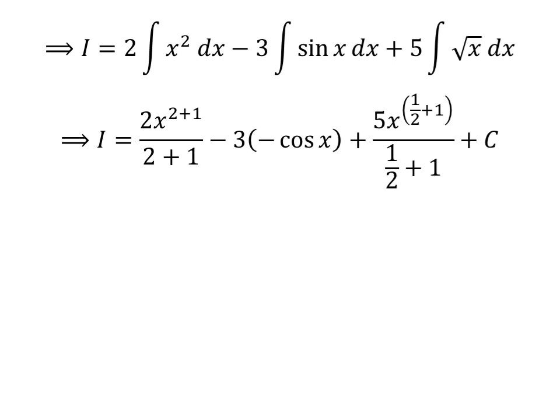So, i is equal to 2 times x raised to the power of 2 plus 1 upon 2 plus 1 minus 3 times minus cosine of x plus 5 times x raised to the power of half plus 1 upon half plus 1 plus capital C. Capital C is the arbitrary constant of indefinite integral. Never forget to add this constant.